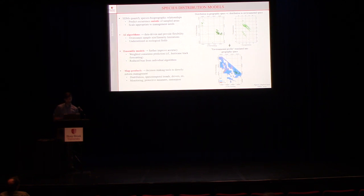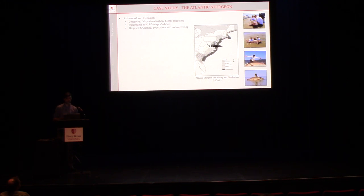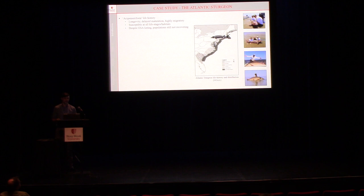The best part for management within this framework is that you get beautiful map products as output that you can use as decision-making tools to directly inform management. The perfect species for a case study — and also for this session — is the Atlantic Sturgeon. We do a lot of work in our lab with Atlantic Sturgeon. This is a species that's very long-lived and highly migratory. They spend a lot of their adult lives in near-coastal or offshore marine waters that could really interact with these wind sites.